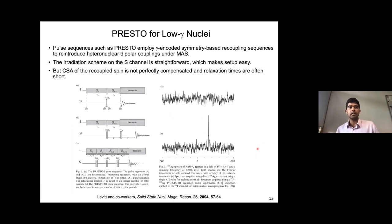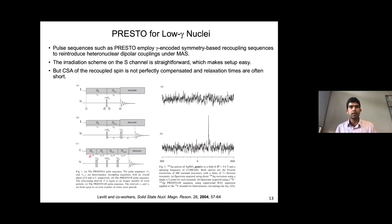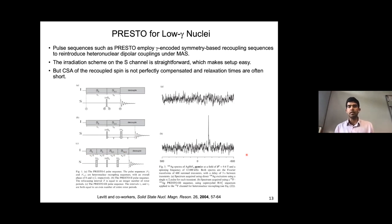As an alternative, there has been really nice work from Malcolm Levitt's group developing PRESTO sequences for low gamma nuclei. The PRESTO sequences have the advantage that the irradiation scheme on the S channel is quite straightforward — just 90 and 180 pulses — and the symmetry-based dipolar recoupling is applied on the I-spin, which in this case is protons. The disadvantage is that the CSA is not perfectly compensated, so relaxation times for protons can be quite short, and the sequence suffers from poorer efficiency compared to CP-type experiments.